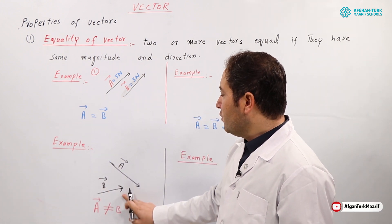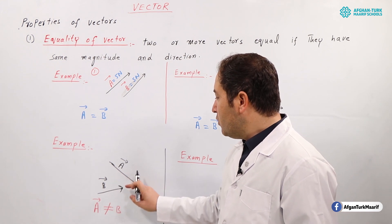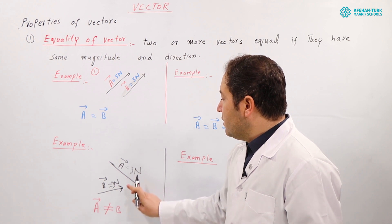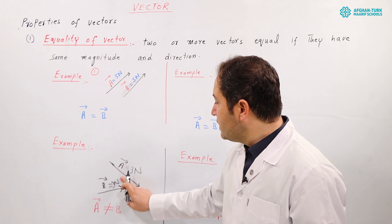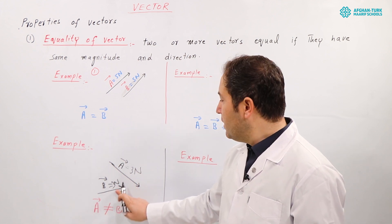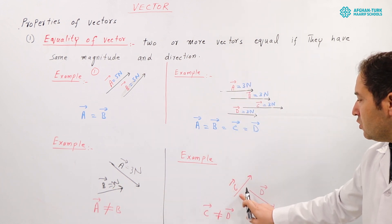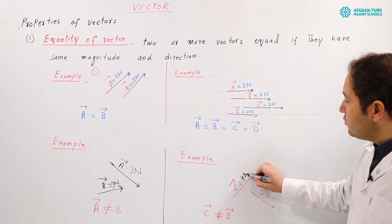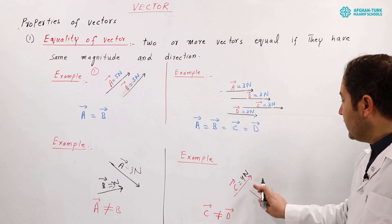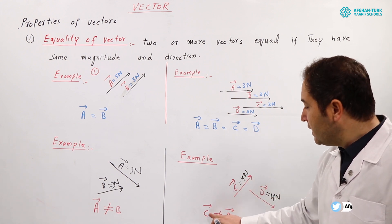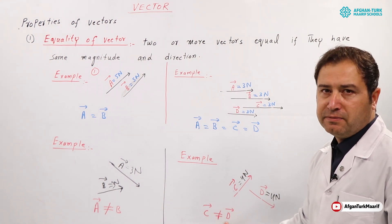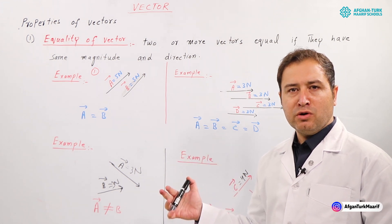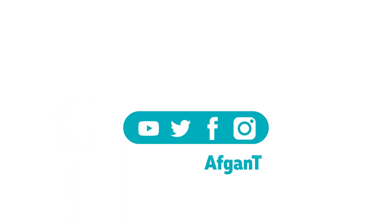In another example, vectors A and B both have 3 newton magnitude, but their directions are not the same, so A is not equal to B. Similarly, vectors C and D both have 4 newton magnitude but different directions, so vector C is not equal to vector D. Thank you, students — if you have any questions, mention them in the comments or call me directly.